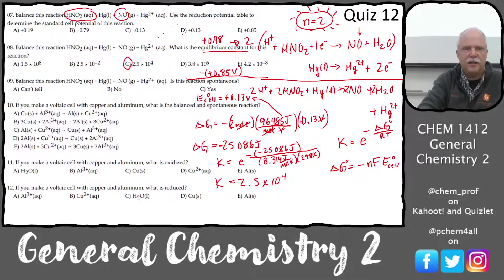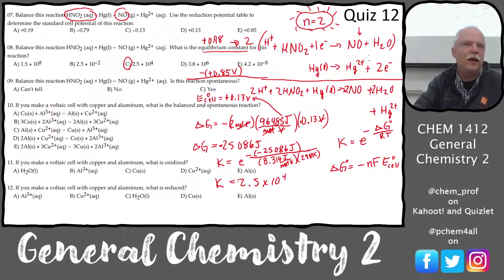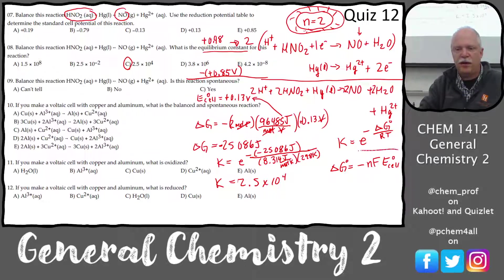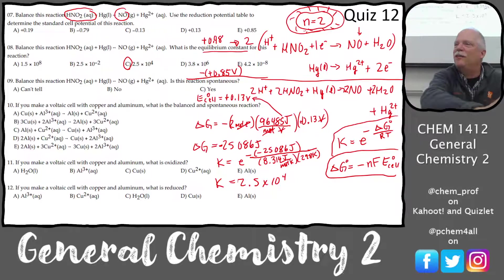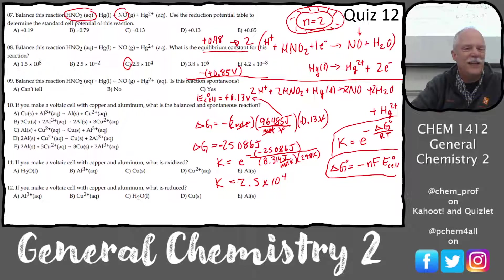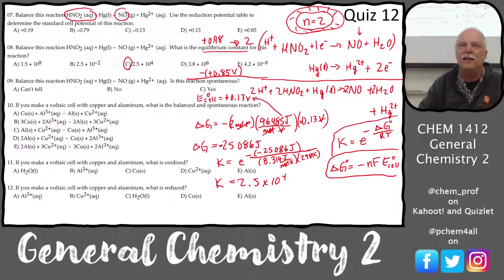Do you see how you got that? This is a beautiful little set of connected equations. We balance the redox reaction using half reactions, figure out N, find the cell potential, use ΔG = −nFE°cell to get the Gibbs energy, then use K = e^(−ΔG/RT) to get the equilibrium constant. This is actually how a lot of equilibrium constants are found — measure the electrochemical potential and you know K.